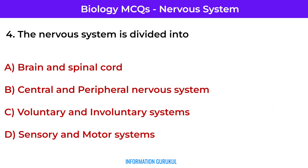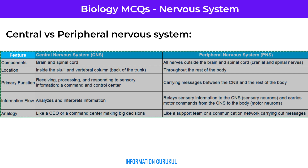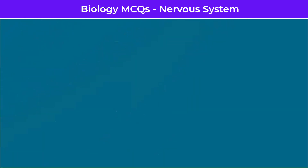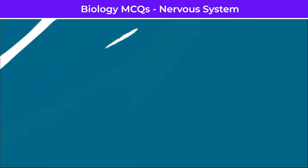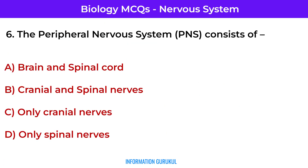The human brain is protected by the cranium. The nervous system is divided into central and peripheral nervous system. The central nervous system includes the brain and spinal cord, which are responsible for processing information, while the peripheral nervous system consists of all other nerves that extend from the CNS to the rest of the body. The CNS consists of brain and spinal cord; the peripheral nervous system consists of cranial and spinal nerves.